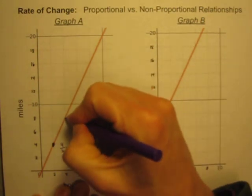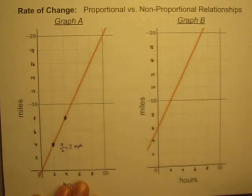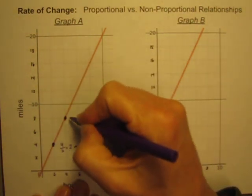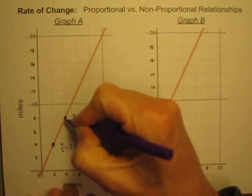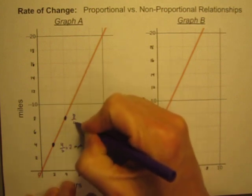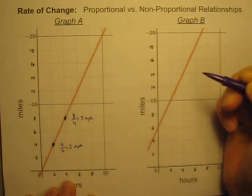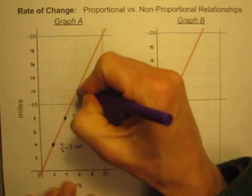I could pick a different point on the line. Let's say this one right here. And I could say it's gone from zero to eight miles. It has gone eight miles in four hours. Eight miles in four hours is still two miles per hour.